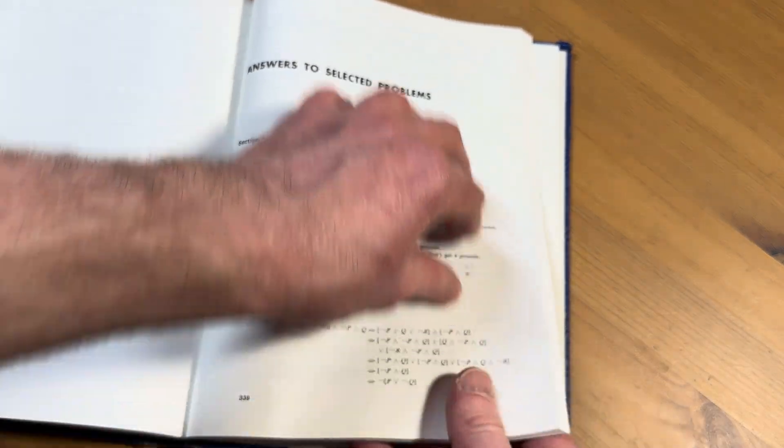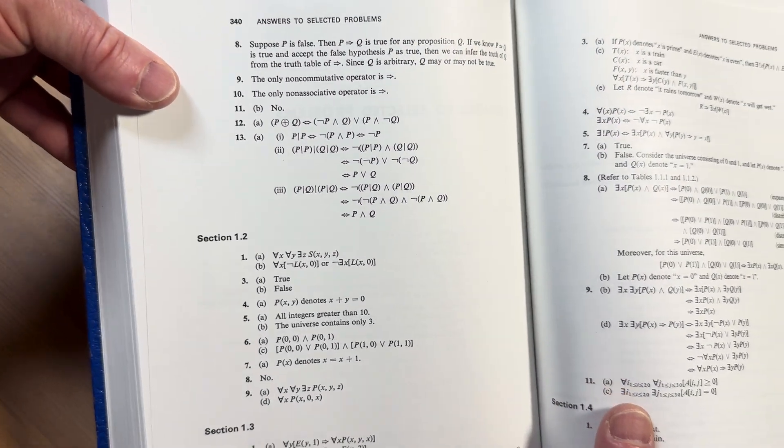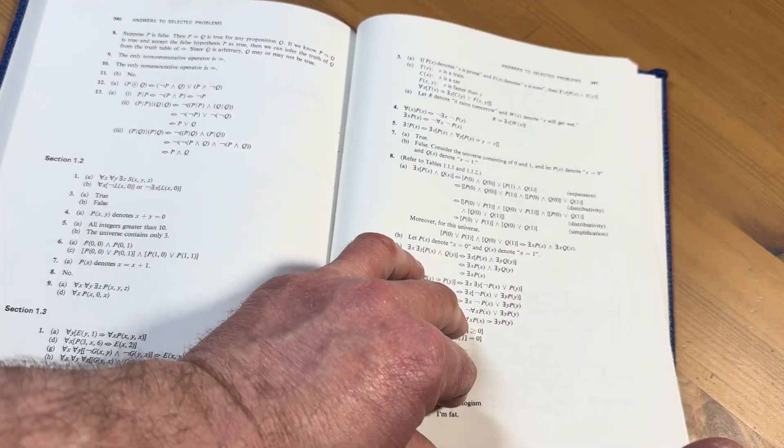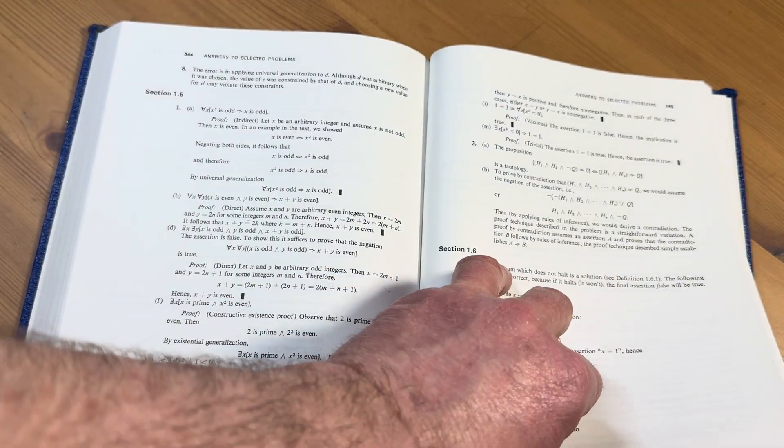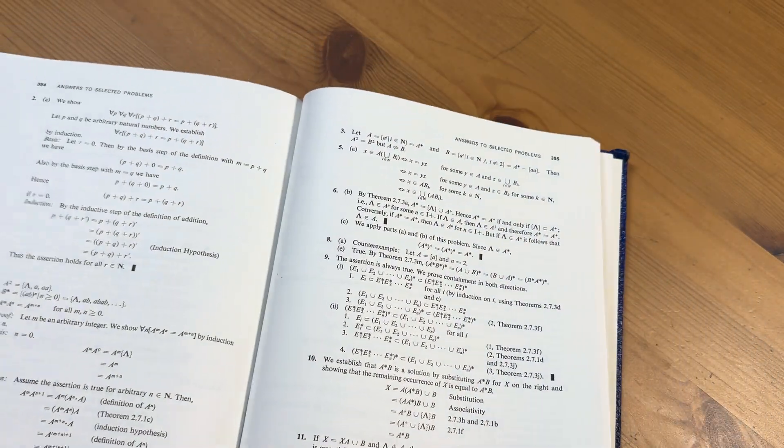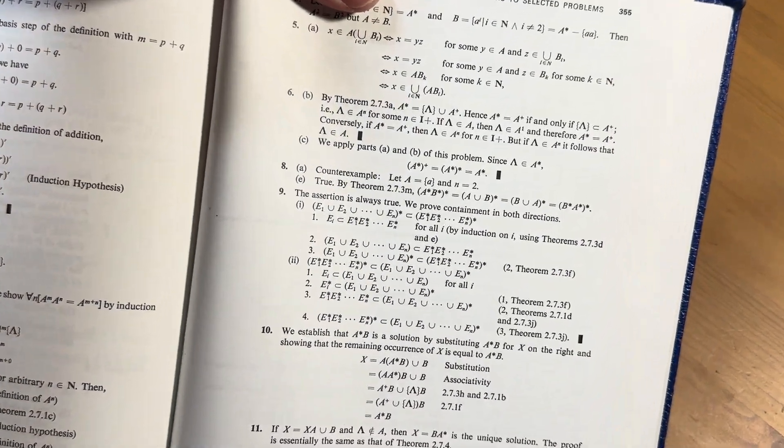But you see answers to selected problems. So there's some here, right? But watch this when I turn the page. Look how many more there are. Look at all of that. That's impressive. This is really good. Look at this. These are proofs. This is impressive.